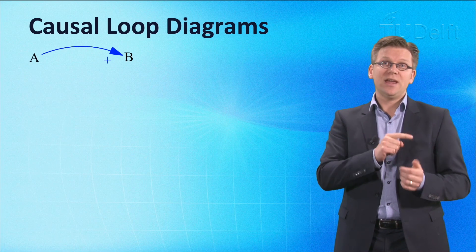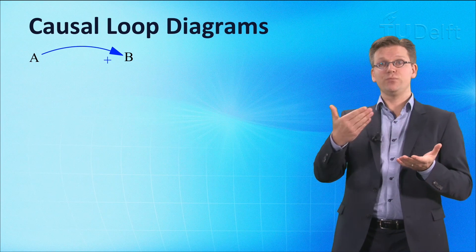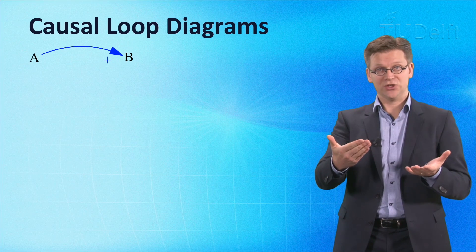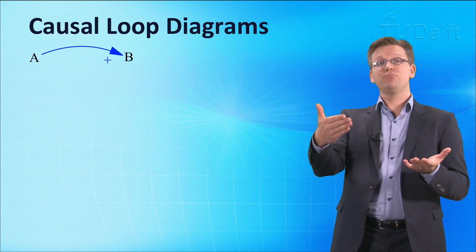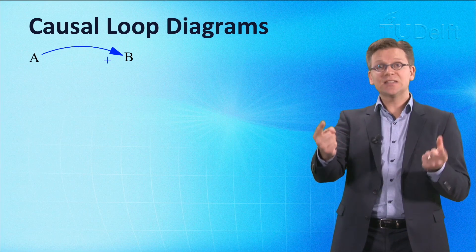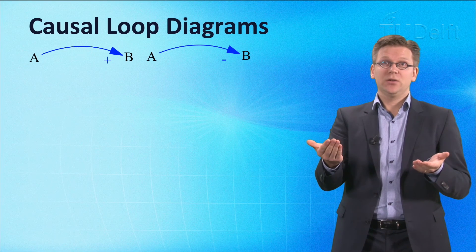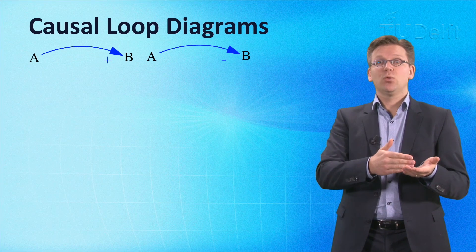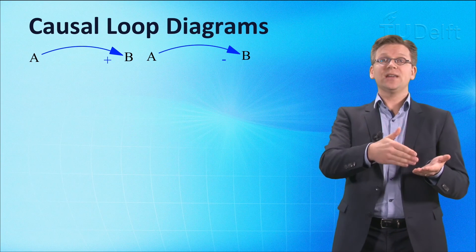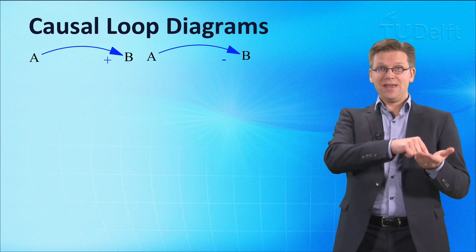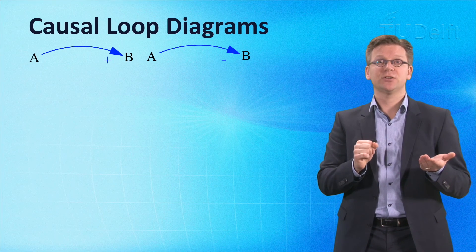A positive causal link from A to B either means that A adds to B if B is a stock variable, or that a change in A causes a change in B in the same direction. And for a negative causal link from A to B, one says that A subtracts from B if B is a stock variable, or that a change in A causes a change in B in the opposite direction.